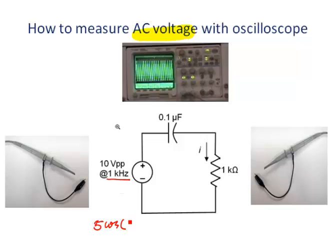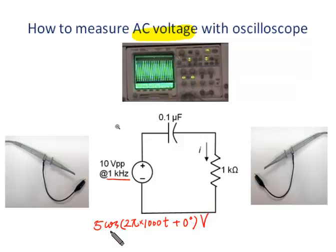The radian frequency should be 2π times 1000 radians per second. Generally, we assume the power supply is a reference, so the phase angle is 0 degrees.